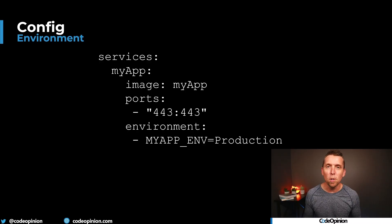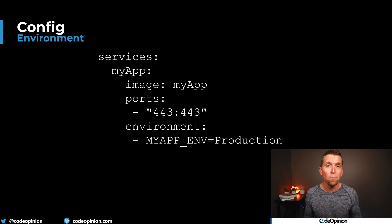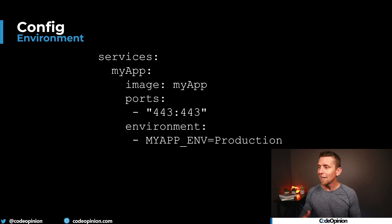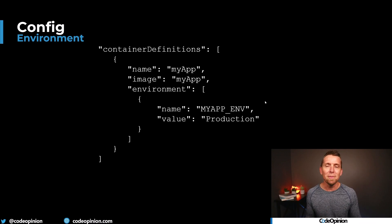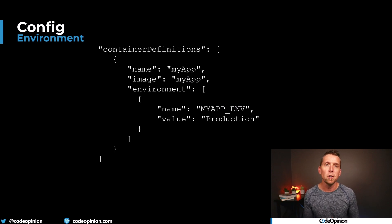When you're working in multiple environments, you need to tell your application at startup what environment it's in — is it production? That's when you can use environment variables. Looking at a Docker Compose file, you can specify an environment variable like myapp_env and set it to production. When the app starts up, it reads that variable and figures out which configuration to load. The same applies to an AWS ECS task — you can define your environment the same way.